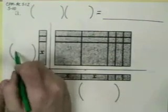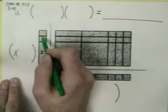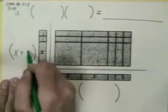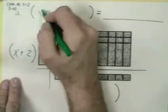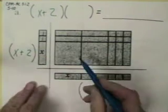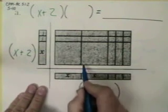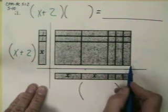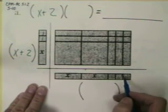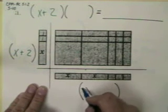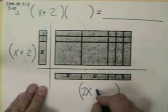So I can count these and add them up. x plus 2 on this dimension. And on this dimension, x wide, x wide, 1, 2, 3. They put those tiles here so we could see it. So this is going to be 2x plus 3.